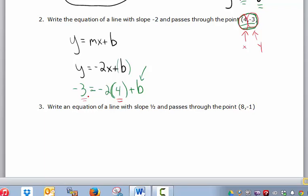Now what do we do next? Now we solve for b, because you notice I have this equation here: negative 3 equals negative 2 times 4, plus b. That'll allow me to solve for b. That's the only unknown I have.